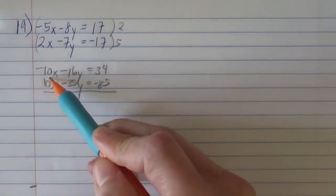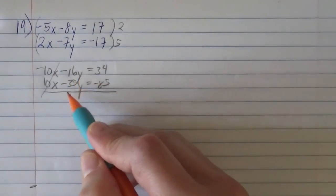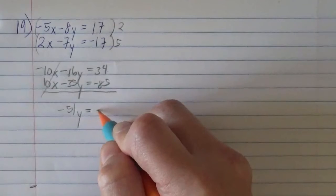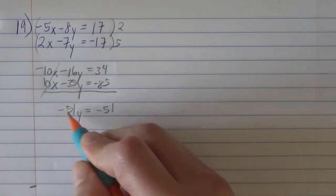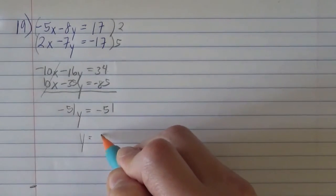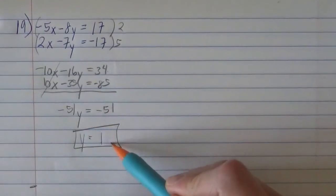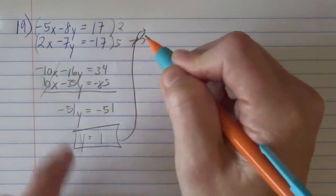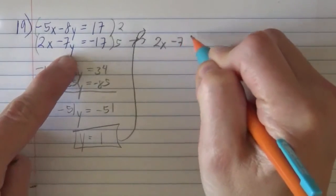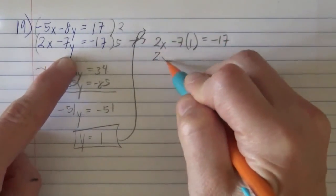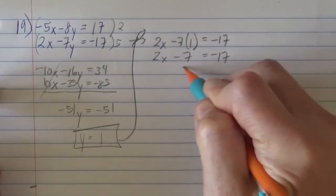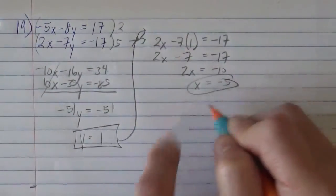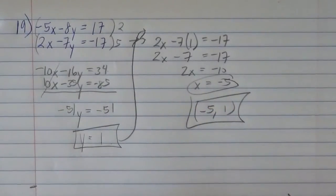And so when I go and add these, minus 10x plus 10x goes away like we planned. And minus 16y minus 35y is minus 51y. And then 34 minus 85 is minus 51. And so then when we divide by negative 51, y will just equal 1. And so we got it down to 1 unknown and we can solve that no problem. And then we just plug it back in to find the x. You can plug it into either one you like. I'm thinking maybe the bottom one has smaller numbers so I'll plug it in here. So this will be 2x minus 7 times 1 equals negative 17. So it's 2x minus 7 equals negative 17. So 2x equals minus 10. So x is negative 5. Putting those together to make our ordered pair, the x is negative 5, the y is 1. And there you have it. Cool. Here we go.